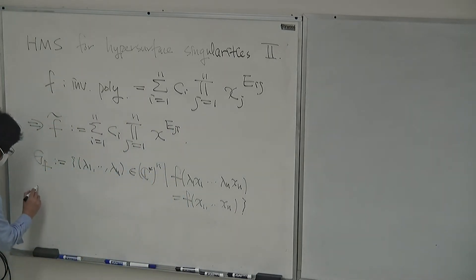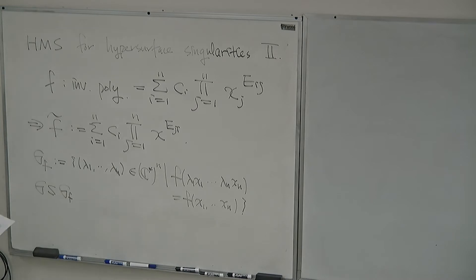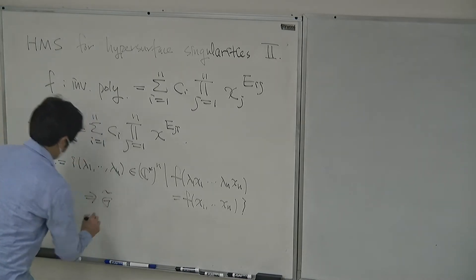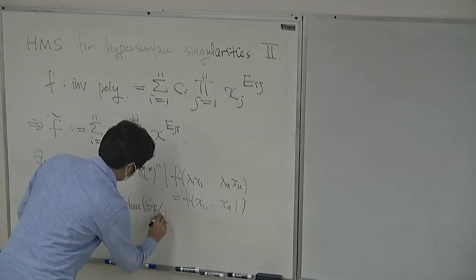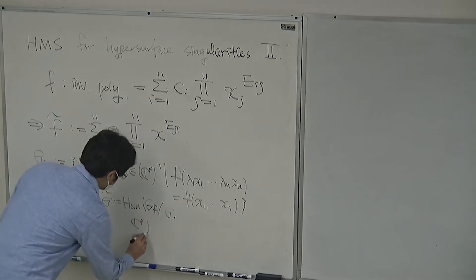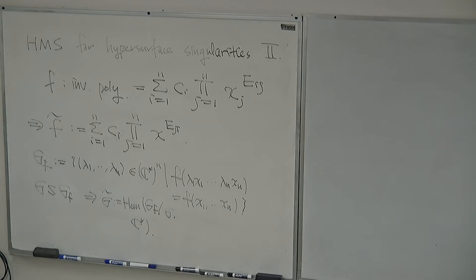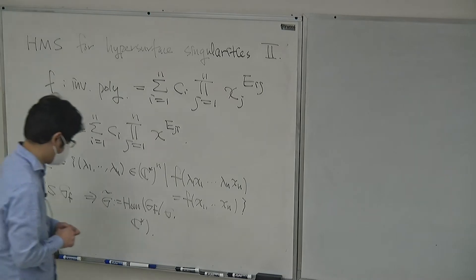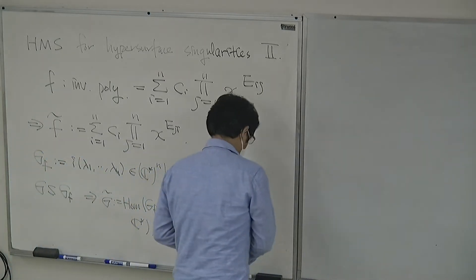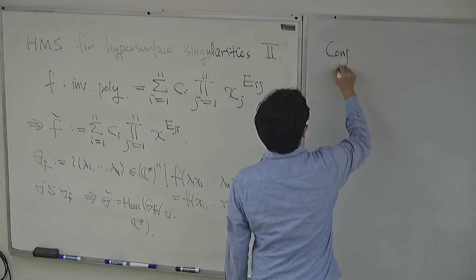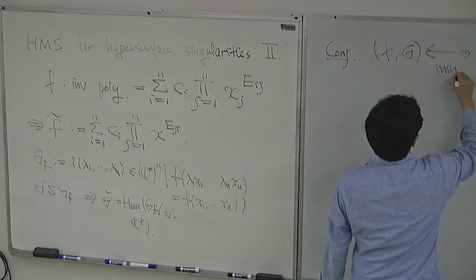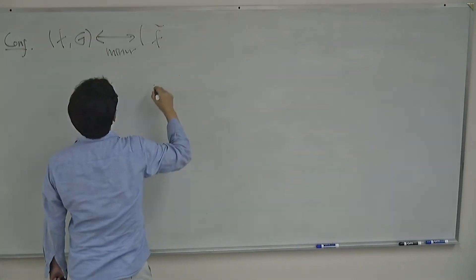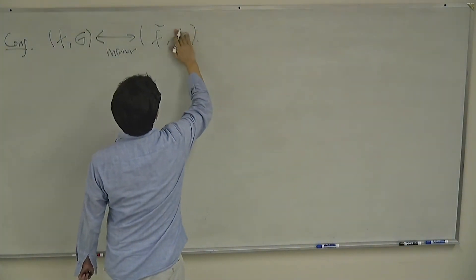Whenever I have a subgroup G in this symmetry group, I can define a dual group, which is G_F over G acting on C*. The Berglund-Hübsch-Henningsen conjecture is that (F, G) is mirror to the transpose polynomial with its dual group.